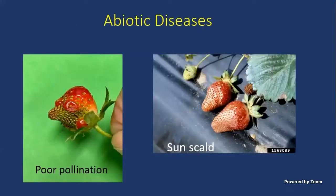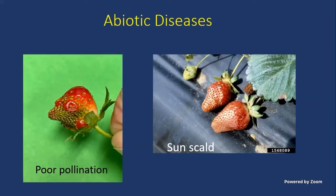Just a couple of examples of abiotic diseases. This poor pollination I saw up in Edgar's area up in Clanton, possibly leading to this disfigured fruit — kind of looks like a bird. Also sun scald: some fruit on black plastic mulch went from relatively cold to warm, those fruit were exposed, and you had damage like that. Insect problems are out there too, like Ash had just talked about.